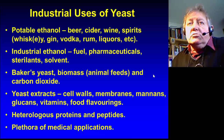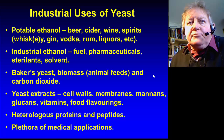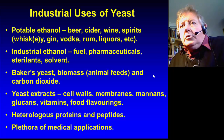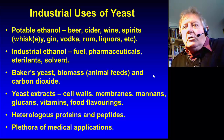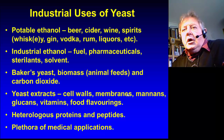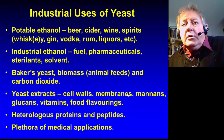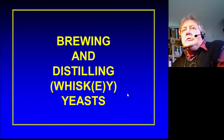Baker's yeast includes biomass, animal feeds, and natural carbon dioxide. Yeast extracts — cell walls, membranes, mannans, glucose, vitamins, fluid flavorings — are used extensively in foods, particularly soups, and also on toast during breakfast, including things like Marmite and Vegemite. These are proteins and peptides produced as a result of genetic manipulation. Insulin and interferon are in this category — a plethora of medical applications that I will not consider further today.